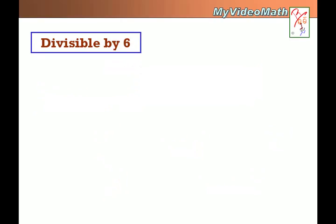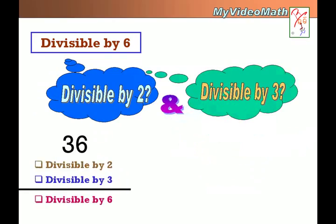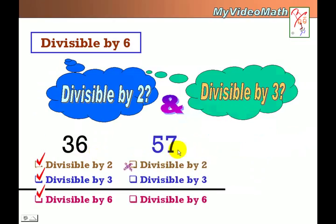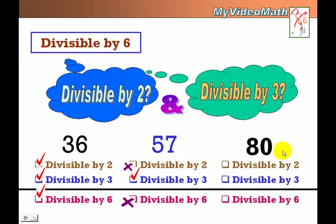Divisible by 6. If a number is divisible by 2 and is divisible by 3 at the same time, then it is divisible by 6. For example, 36 — yes. 57 is not divisible by 2, so it's not divisible by 6. 80 is not divisible by 6 either.